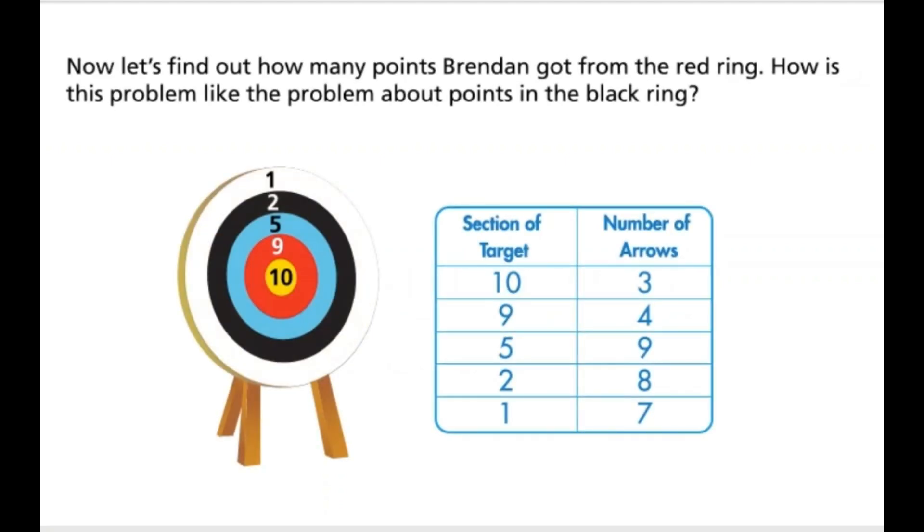Now, let's find out how many points Brendan got from the red ring. How is this problem like the problem about points in the black ring?